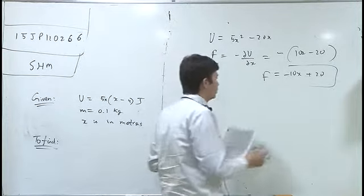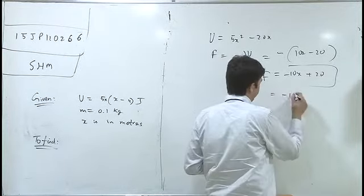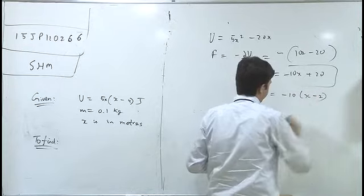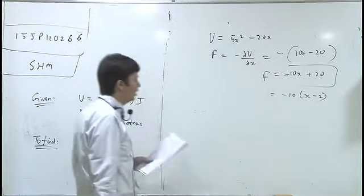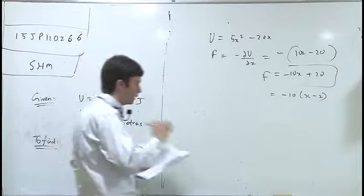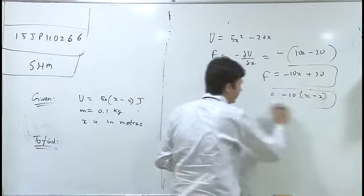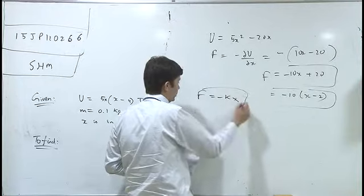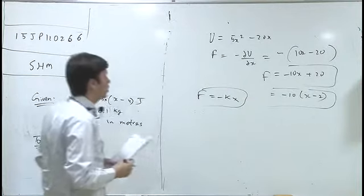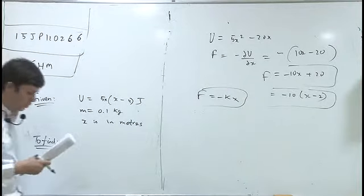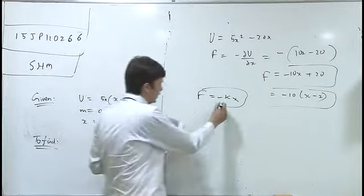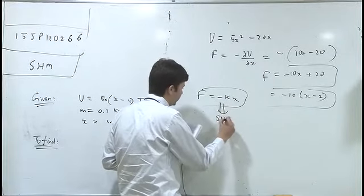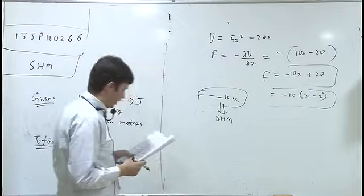So if I have a force of minus 10x plus 20, and if we have a force in the form of F equals minus kx, which means it is SHM. If it is SHM, then I will say that my option C is correct.